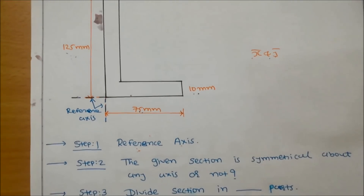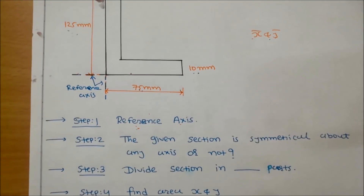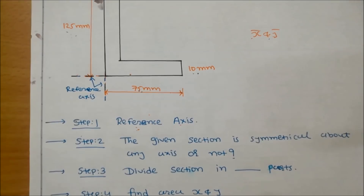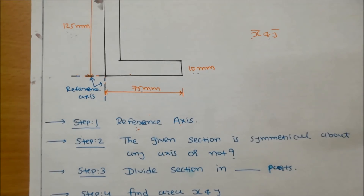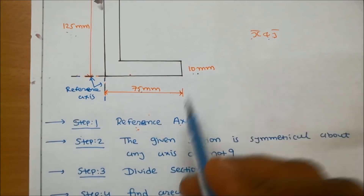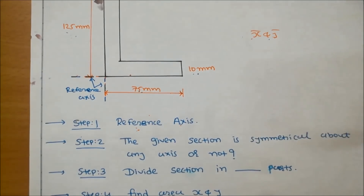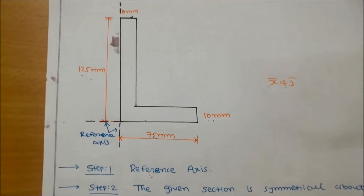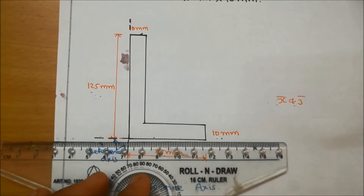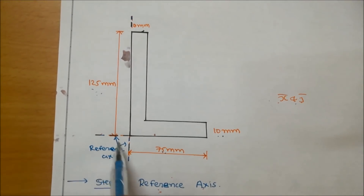For finding center of gravity, follow some simple steps. In step number one, locate the reference axis. The reference axis means the axis from which we indicate X-bar and Y-bar. Generally, the reference axis is indicated at the left side and bottom of the section.